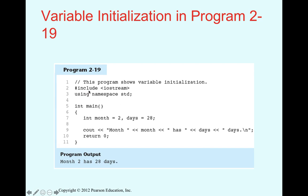Here is a code example using iostream and namespace std where we define two variables, give them initial values, and then print both. The output reflects the initialized values.